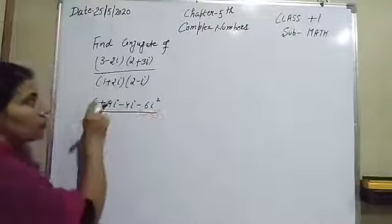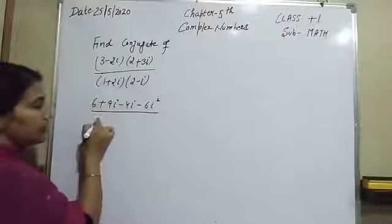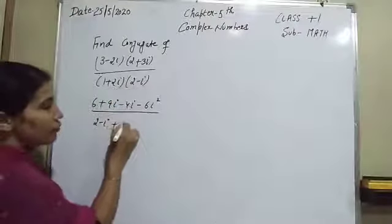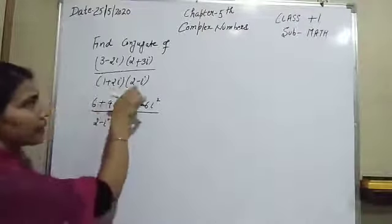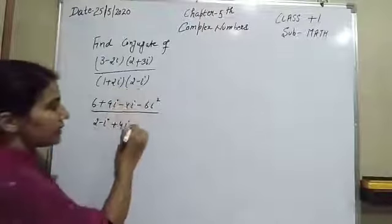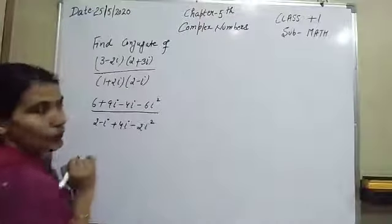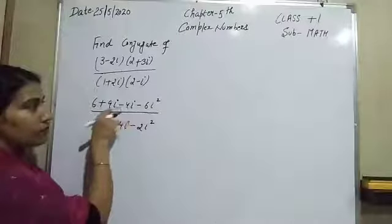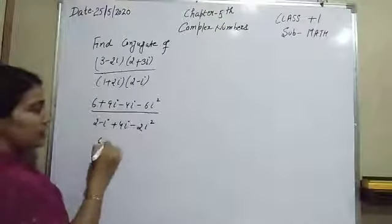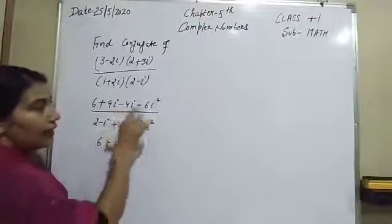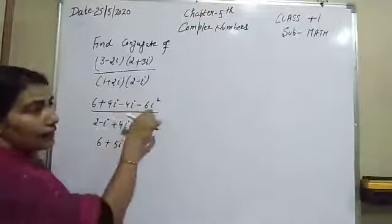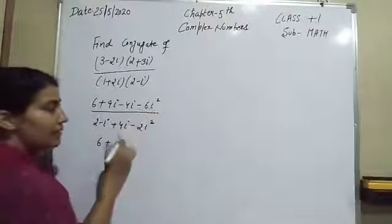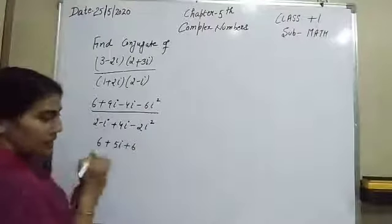Similarly in the denominator: 1 into 2 minus eta gives 2 minus eta, and 2 eta into 2 is 4 eta, and 2 eta into minus eta is minus 2 eta squared. After this we have 6 plus 9 eta minus 4 eta — that is plus 5 eta — and now put the value of eta squared, which is minus 1, so it becomes plus 6.